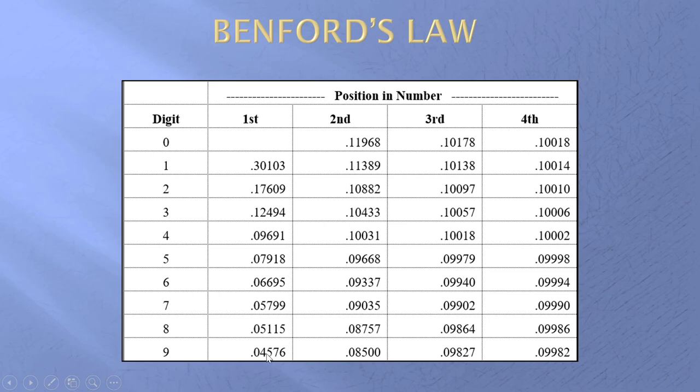In the second position, zero can now be a second digit, can't be a first digit but it can be a second digit. We go from about 12 percent down to 8.5 percent. This is far less skewed towards the lower digits than the first position. Third position even less so, and in the fourth position, for all practical purposes the digits are equally likely.